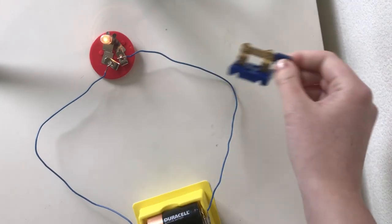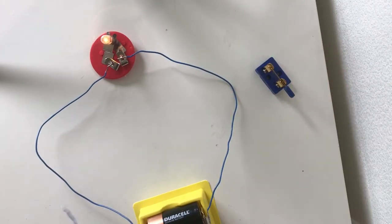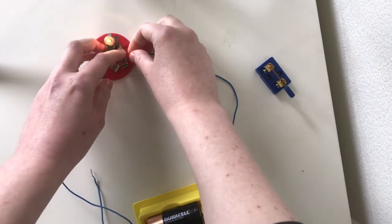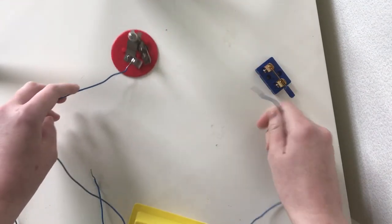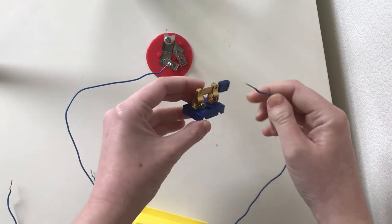To add another step to my circuit, to make it more like a light that you can find in your home, I'm going to add a switch. You'll notice here that I'm being careful to make sure that the metal of my wires is touching the metal of the switch.